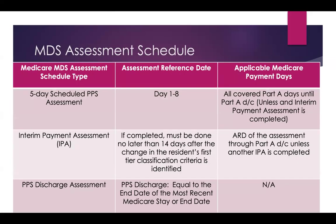The MDS stands for Minimum Data Set. You have your Medicare MDS assessment schedule types: your five-day scheduled PPS (Prospective Payment System) assessment, your interim payment assessment, and your PPS discharge assessment. The five-day PPS assessment covers day 1 through 8, covering all Part A days until discharge unless an IPA is completed. The interim payment assessment must be done no later than 14 days after a change in the resident's first-tier classification criteria is identified. The PPS discharge assessment equals the end date of the most recent Medicare stay, with no application in the Medicare payment days.